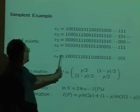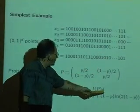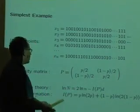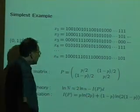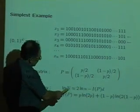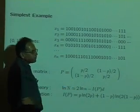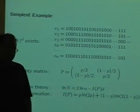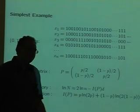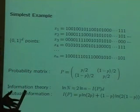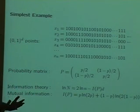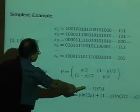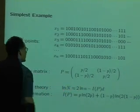We have d bits, so the total information is d times I of p. I take the difference. If this is negative, it means I have enough information to pinpoint the pair. If it's positive, it means I can't pinpoint it, but maybe I can restrict it to a size of N possibilities. This is standard information theory.